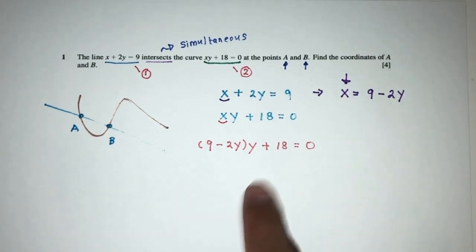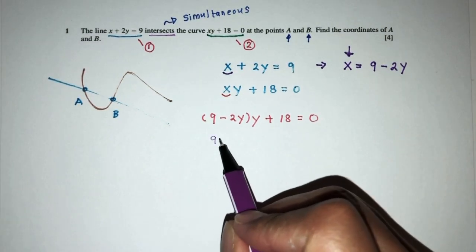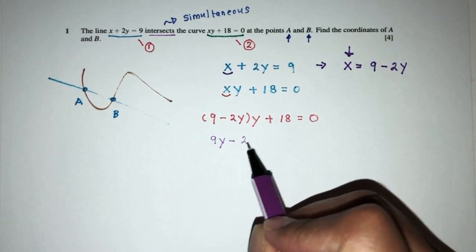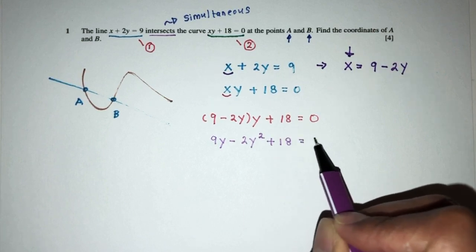Now, we have to solve this. Let's try to solve this. So, you'll have 9y minus 2y square plus 18 is equal to 0.